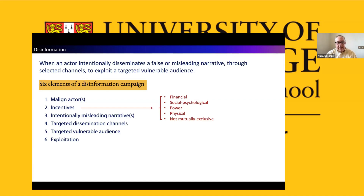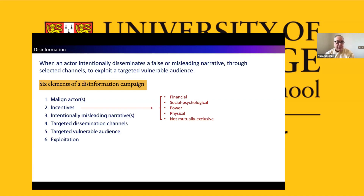I've broken disinformation down into six elements as a framework. It helps clarify a structure on how to think about disinformation and how to spot it. It also helps communicate to somebody who's potentially being misled what they might be seeing and what campaign is happening to them. It also helps articulate in the research field who is looking at which piece — for example, psychologists are looking at the malign actors and the targeted vulnerable audience, while accountants are often looking at the incentives. The six elements are: actors who have incentives to craft a narrative through a channel to a targeted, vulnerable audience for exploitation.